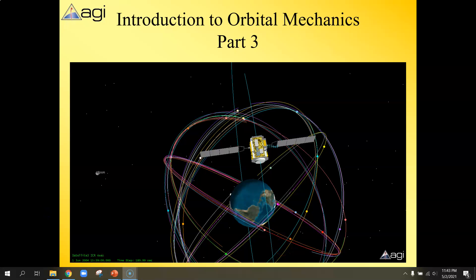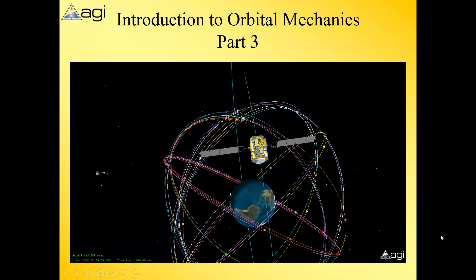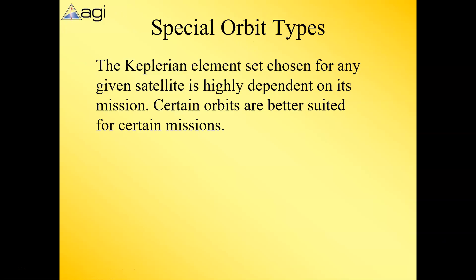Welcome to part three of the introduction to orbital mechanics, thanks once again to the folks at AGI and PLTW for providing the content. In this final segment, part three of three, we're going to be taking a look at some special orbit types. While we always define the six orbital elements, these special orbit types have different values for the orbital element types we already know.